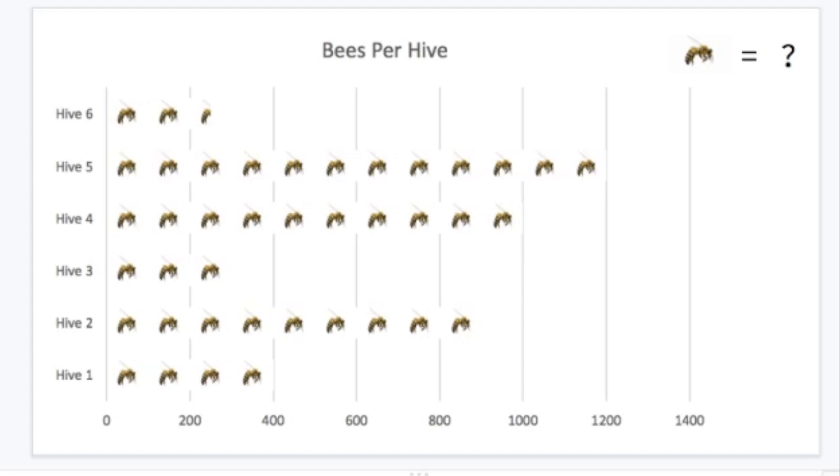And let's see how many pictures of bees are in that space. If I look at hive 1, there are two pictures of bees in between 0 and 200. So I could share 200 amongst those two pictures and work out that each picture would be worth 100 bees.